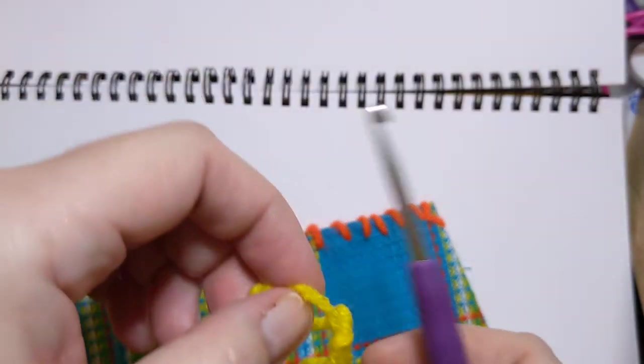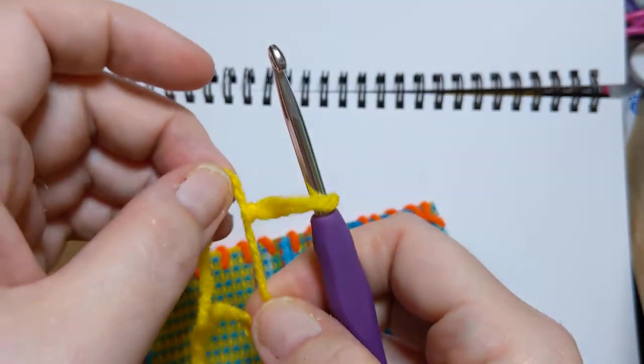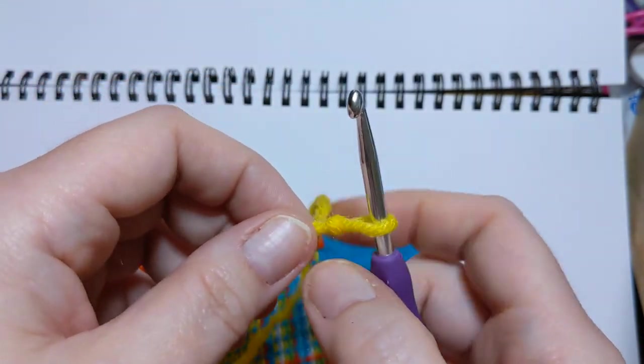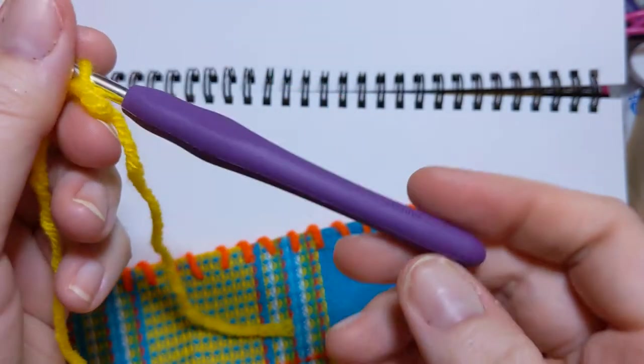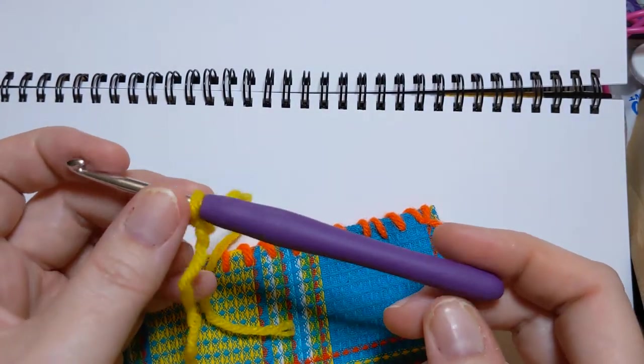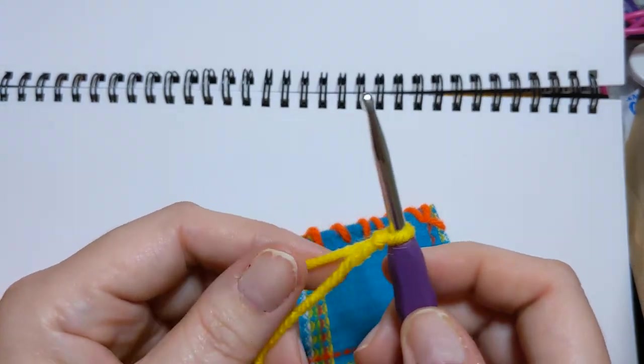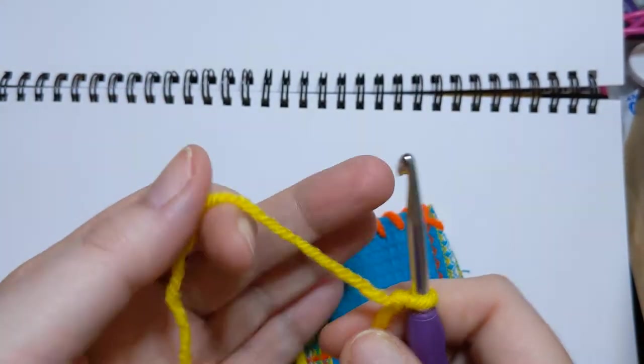You do you. If you are using a yarn that calls for a 4mm for some reason and you want to use a 5mm, great. Or other way around. That's all good. This hook is nothing special. This is an El Cheapo hook that I got from Wish.com. It was cheap. It works really well. It's actually comfortable to use.